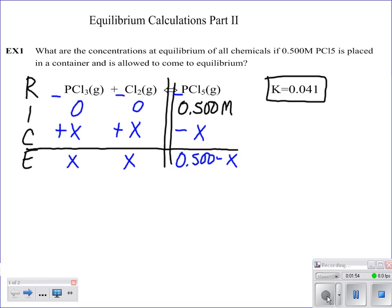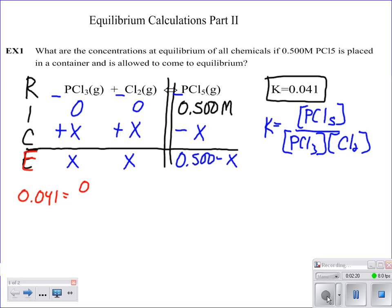We know that our equilibrium constant expression is going to be our products over our reactants, and they're all a coefficient of 1. So once you've got that, then you can go ahead and plug in the values that you have at equilibrium. That's what you're plugging in. So it becomes 0.041. That's what's given to us. And then 0.5 minus x is on top, and then x squared is on the bottom. So we just do the math.